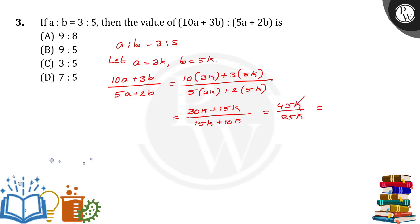So k and k will get cancelled, and 5 cancels 45 nine times, 5 cancels 25 five times. So the answer is 9 is to 5. Option B.